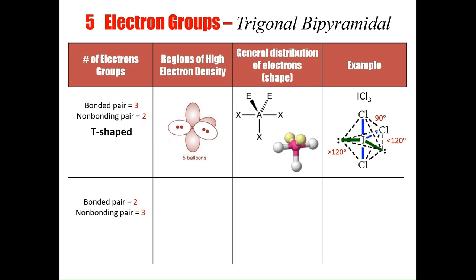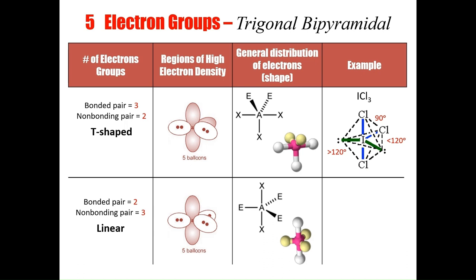The last possible shape with five electron groups has two bonding and three non-bonding groups, causing the molecule to be linear. The lone pairs arrange themselves around the bonding pairs facing in opposite directions. An example is the triiodide ion, I3-, with 120 degrees exactly between each of the lone pairs — equidistant due to equal repulsion — and 180 degrees between the bonded atoms on either side of the central atom.